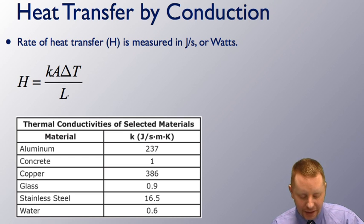Different materials have different thermal conductivities. Something like aluminum has a very high thermal conductivity, 237, while something like concrete, glass, water have much lower thermal conductivities.